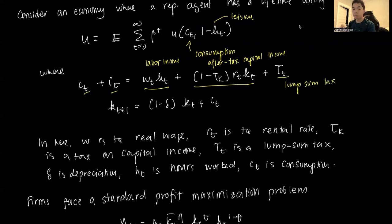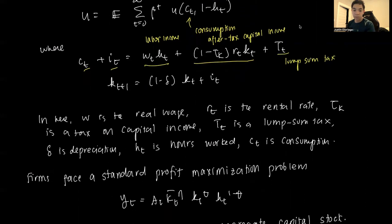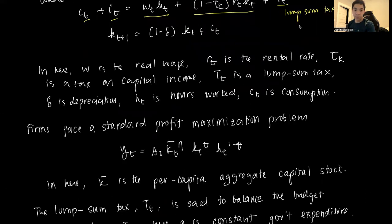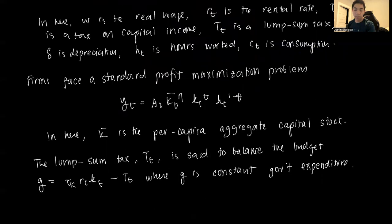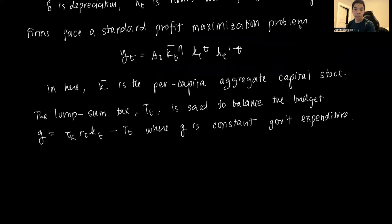And capital evolves using a standard capital accumulation equation. So that's the consumer's problem. For the firm, we have that there exists this per capita aggregate capital stock, which is basically like a share of some huge capital stock.